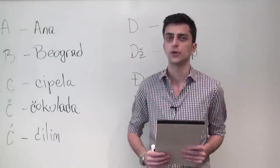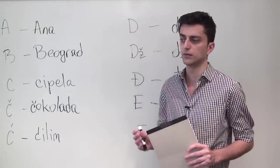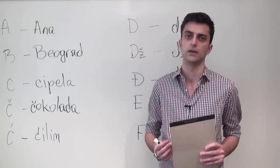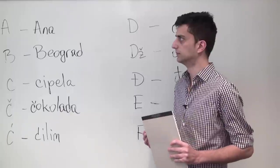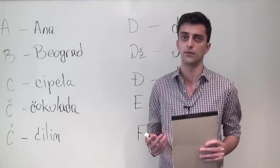A few more things that I should mention is that like I said there are 30 letters in the alphabet, 25 of which are consonants and 5 vowels.